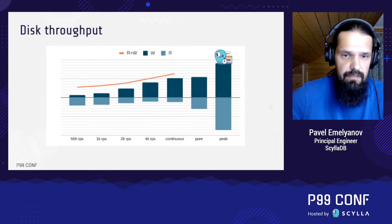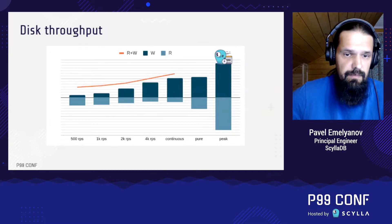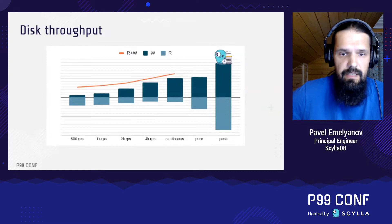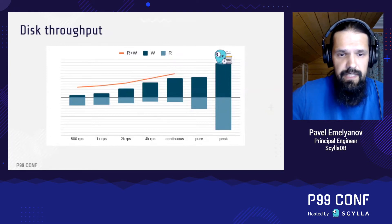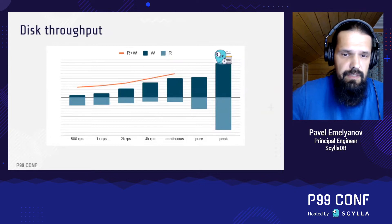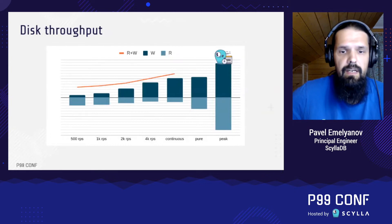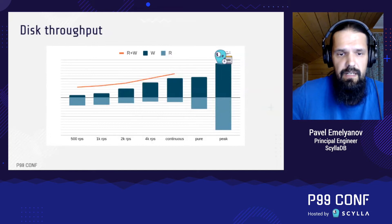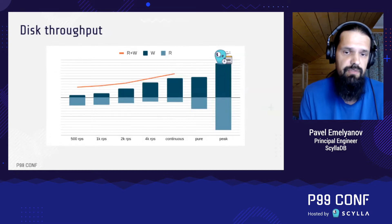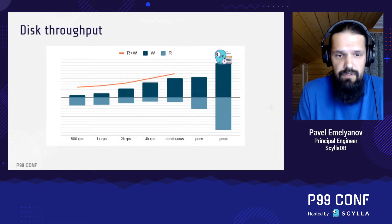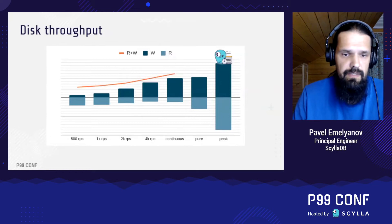If doing reads and writes with the concurrency of one at the same time, the disk will clearly inhibit read throughput for some reason. As we later noticed, this inhibition is decreasing if the intensity of write decreases. The four left bars are mixed workload with rate-limited writes, and as you can see, the disk still pushes reads down, even though not to the same extent.